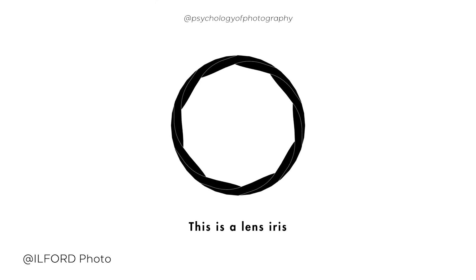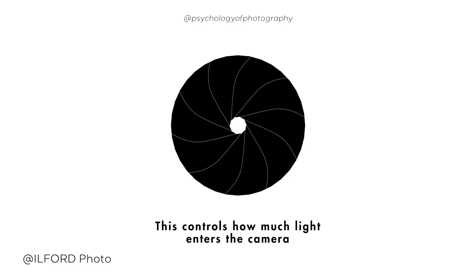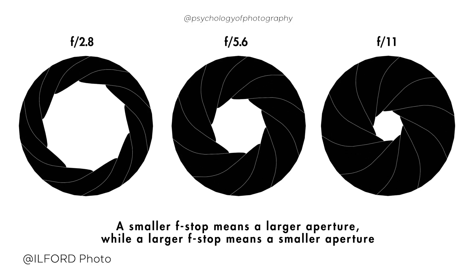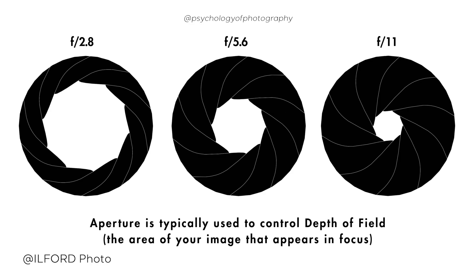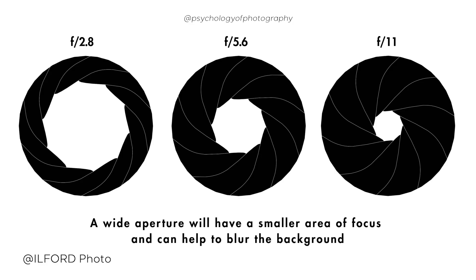Aperture refers to the size of the camera's lens opening, which controls the amount of light that enters the camera. The aperture is measured in f-stops, and the lower the f-stop number, the larger the aperture and the more light that enters the camera. The higher the f-stop number, the smaller the aperture and the less light enters the camera. Aperture also plays a critical role in depth of field, which refers to how much of the image is in focus.